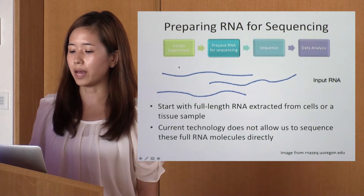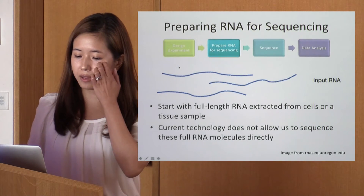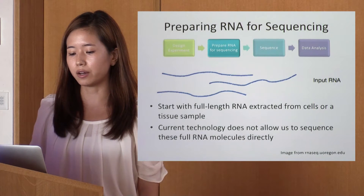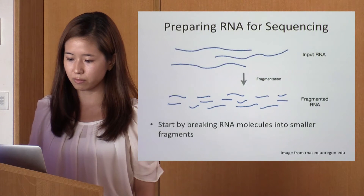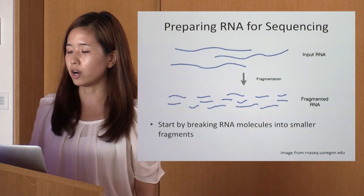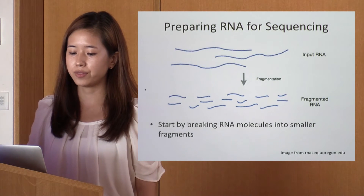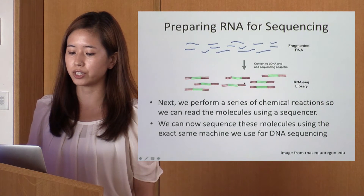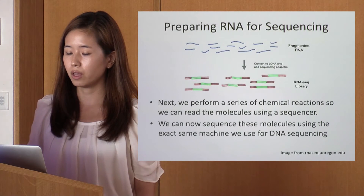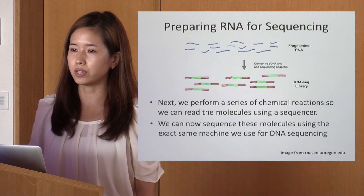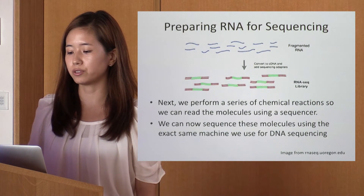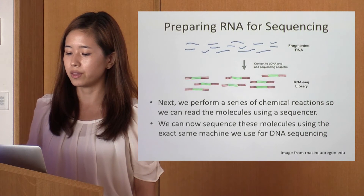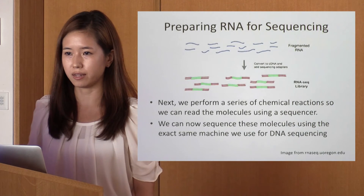The next step is to prepare libraries for sequencing. To sequence RNA, we start out with full-length RNA extracted from cells or tissue samples. Current technology does not allow us to sequence these full RNA molecules directly, so since the whole RNA molecules are too large to sequence, we need to break them into smaller fragments — this is the fragmentation step. Next, we perform a series of chemical reactions: we convert the fragmented RNA into cDNA and add the sequencing adapters. The collection of molecules ready for sequencing is called a library. We can then use those libraries to sequence using the same machine and chemistry used for DNA sequencing.